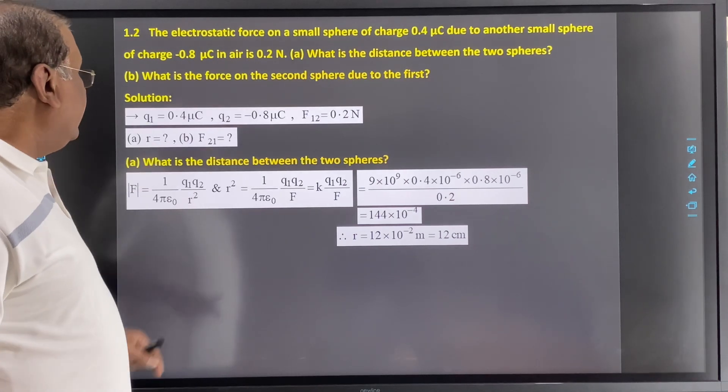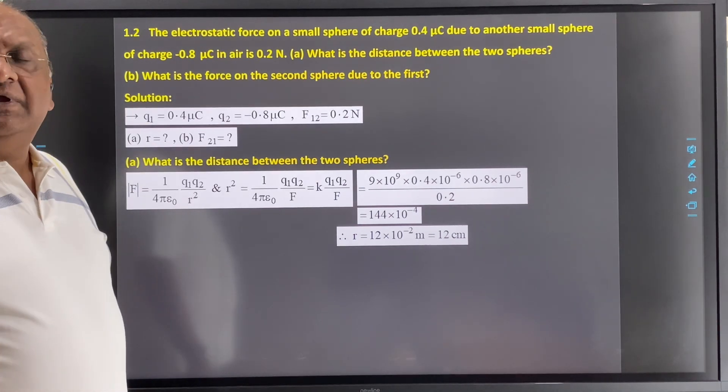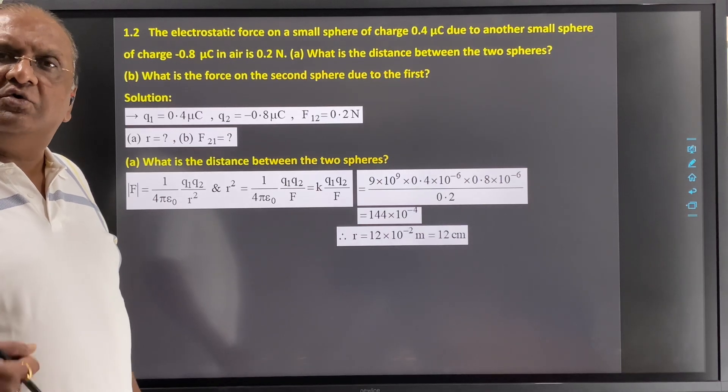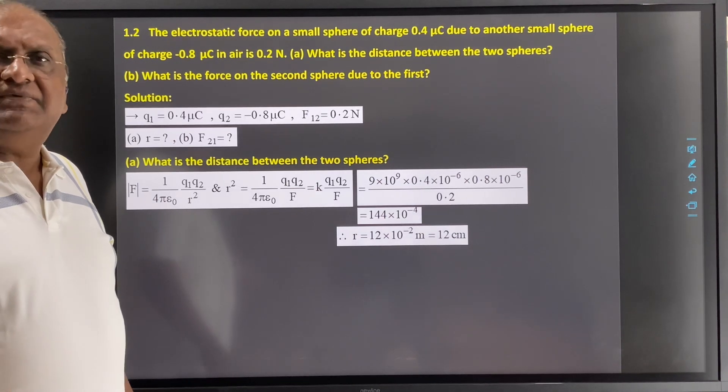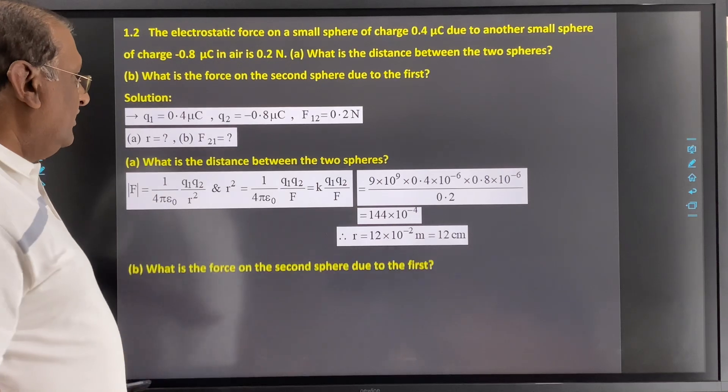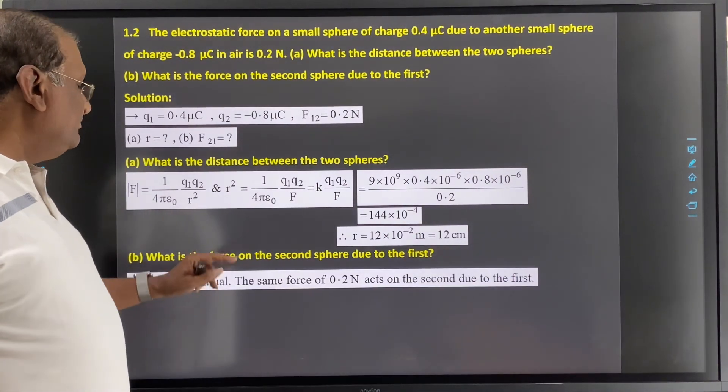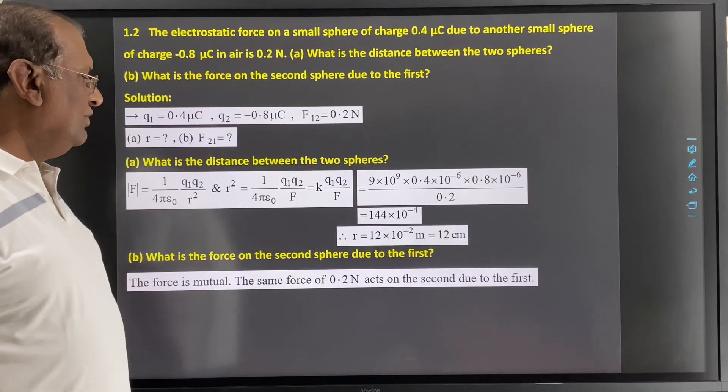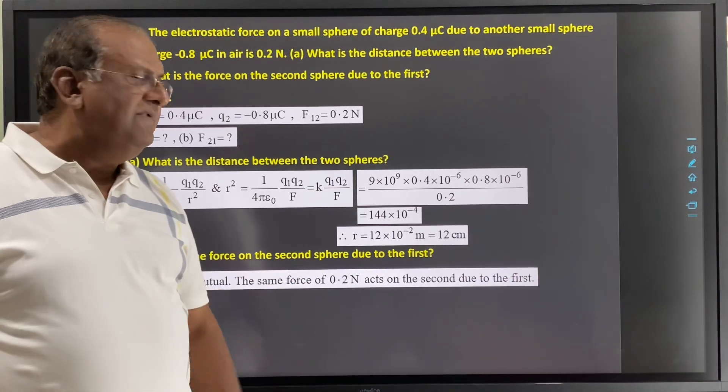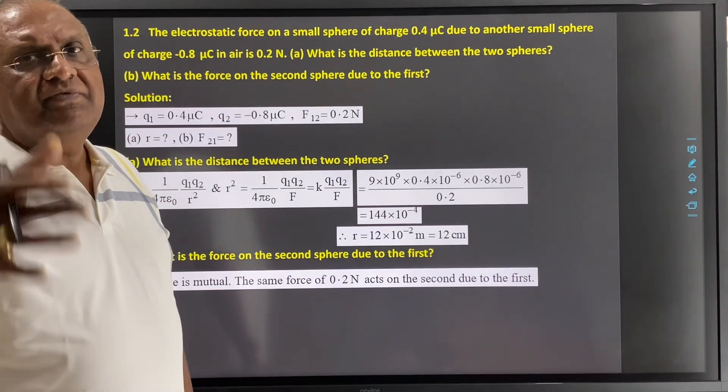Now for part B, force on 2 by 1. Force on 1 by 2 and force on 2 by 1, it is one and the same thing. The force is mutual. The same force of 0.2 newton acts on the second due to first one.